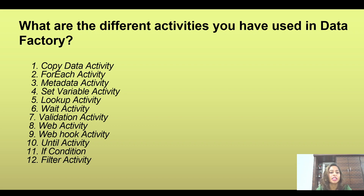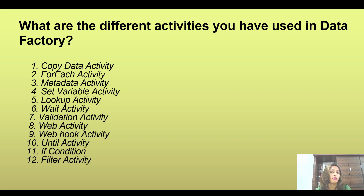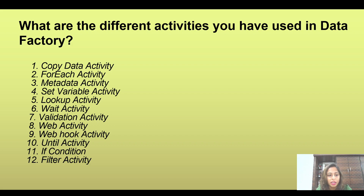Then you have the for each activity — something you want to execute in a loop, where you run a set of activities inside a for loop. You also have the metadata activity, which lets you derive metadata information about a source dataset. Similarly, you have the set variable activity, where you define a variable and assign it a value. There's also the lookup activity, which lets you get output through a query or a singleton output from a table. And you have the wait activity, which allows your pipeline to wait for a specified amount of time.